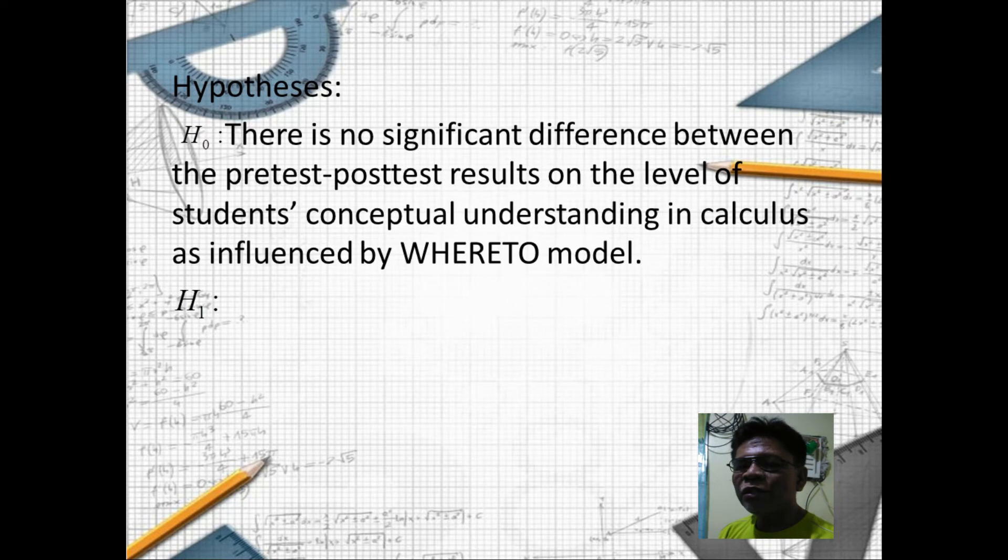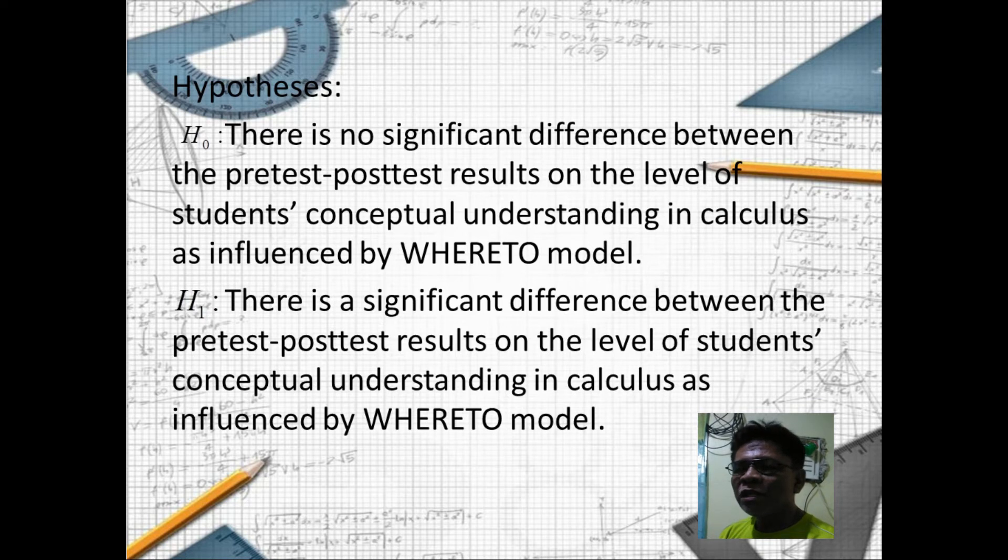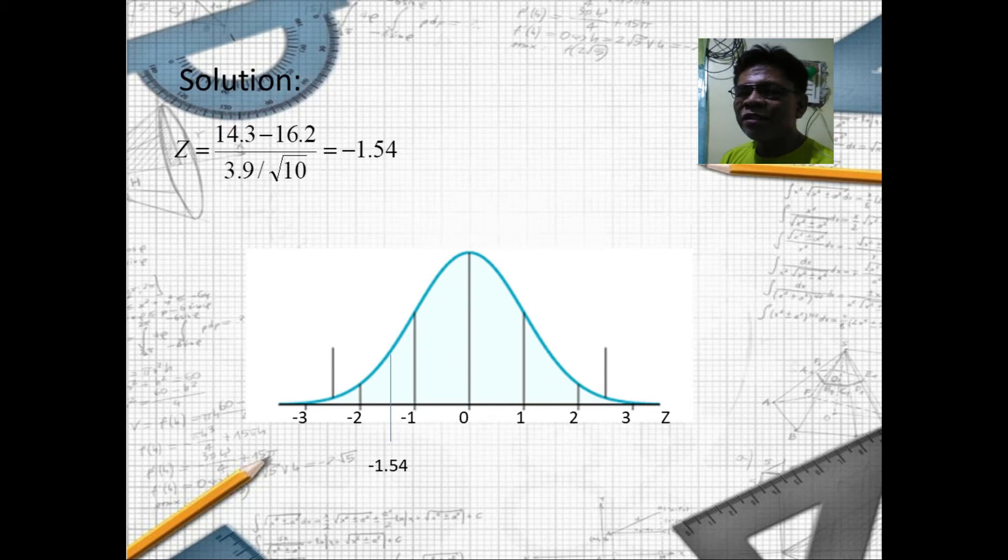We have a solution. We substitute the given data to our formula. The d̄ equals 14.3, then the μ_d equals 16.2, and s_d equals 3.9, then square root of 10.